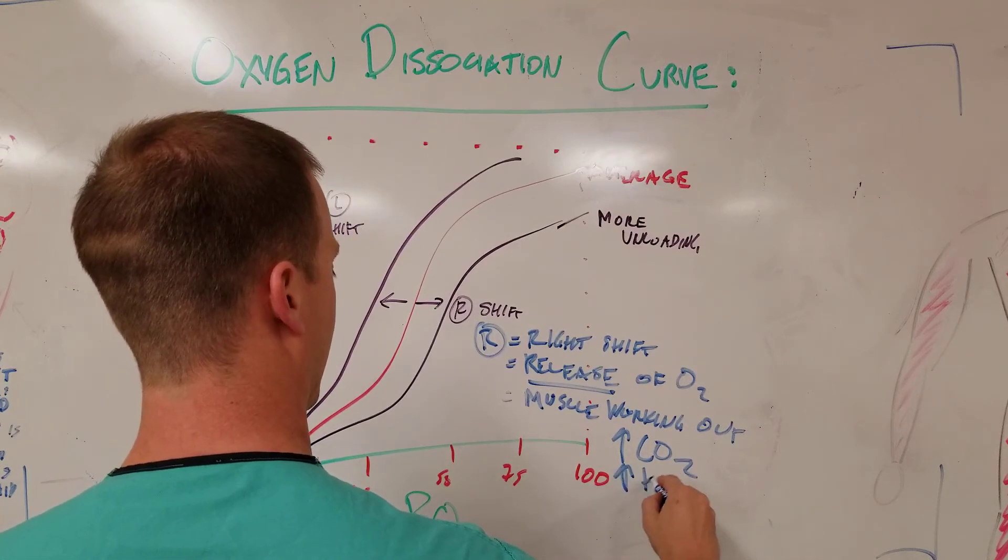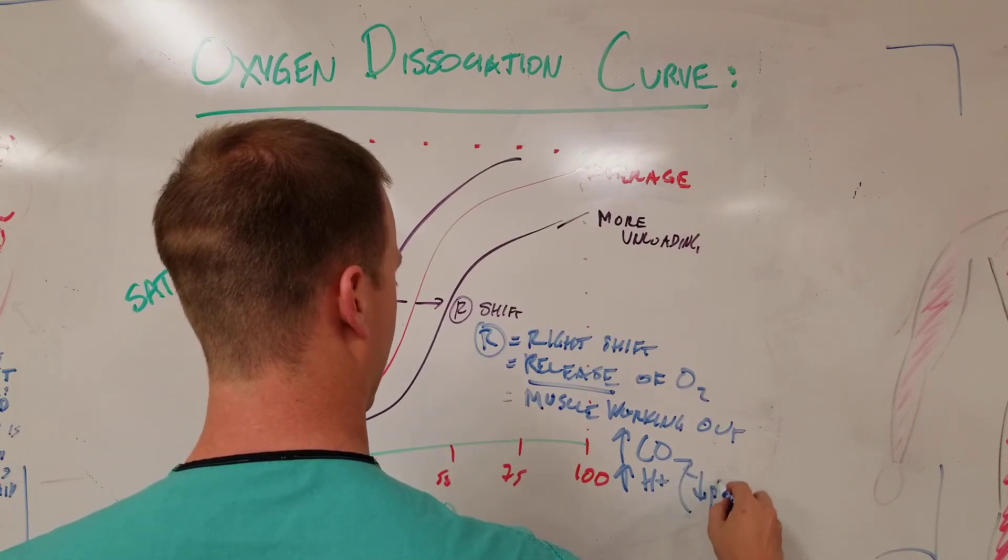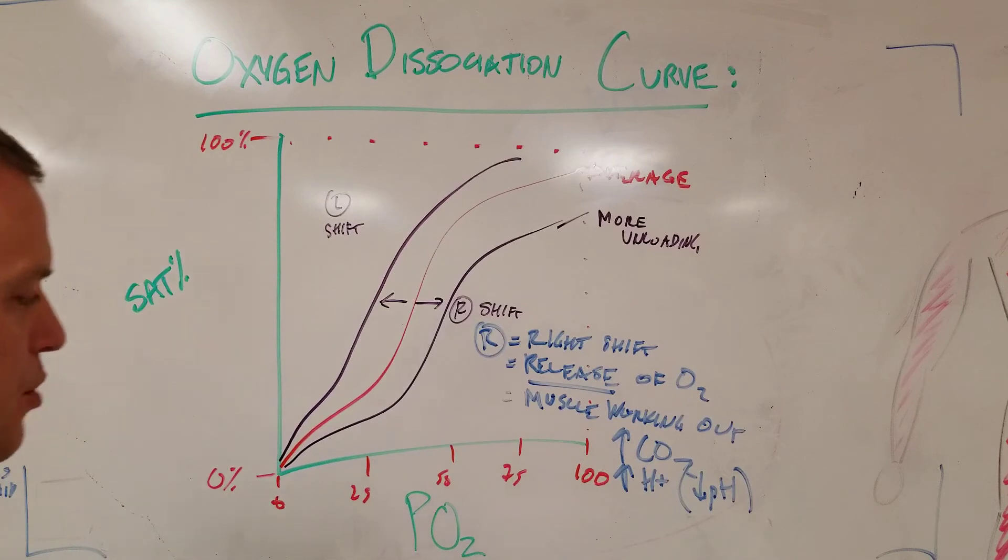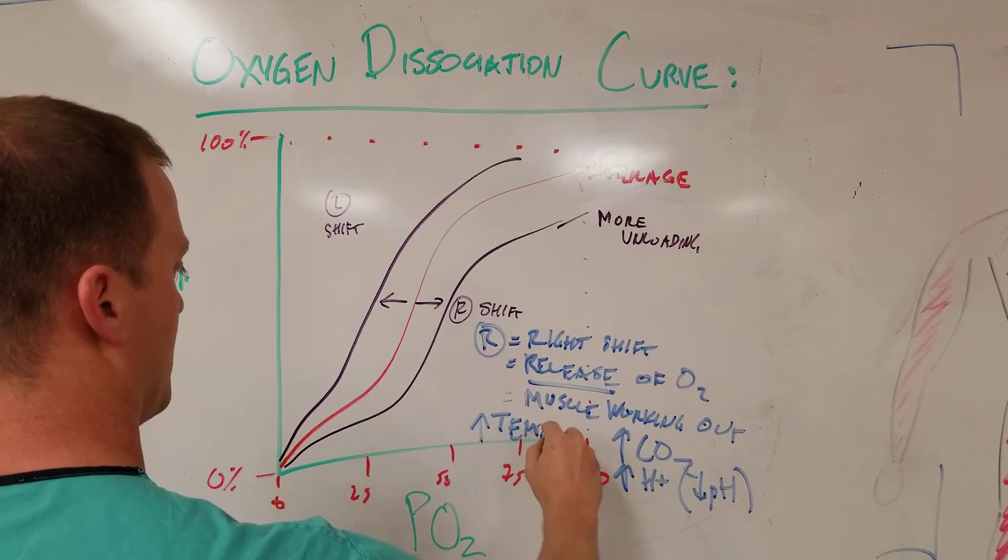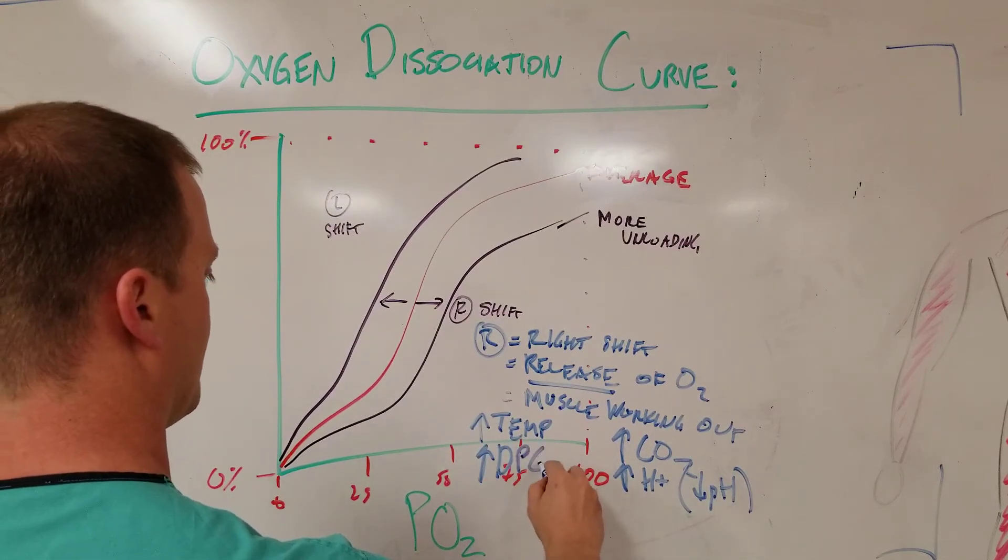You're going to have higher acid. And this gets tricky because it's actually a lower pH. A lot of people get messed up with that. A lower pH is more acidic, which means more H protons concentration. A higher temp, right? Muscles that work out get hotter.